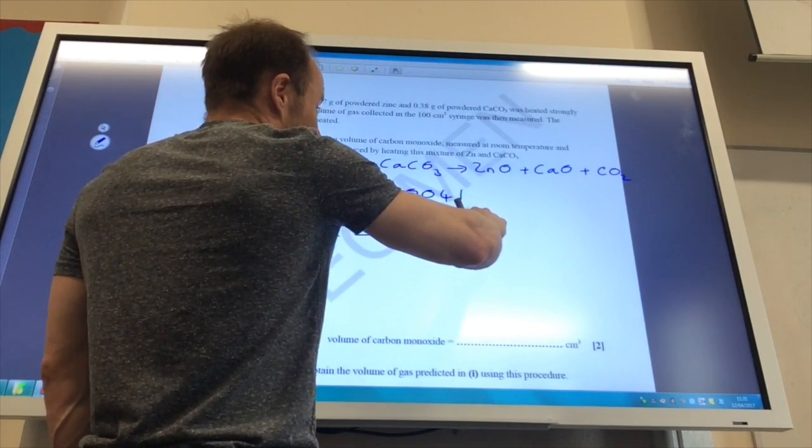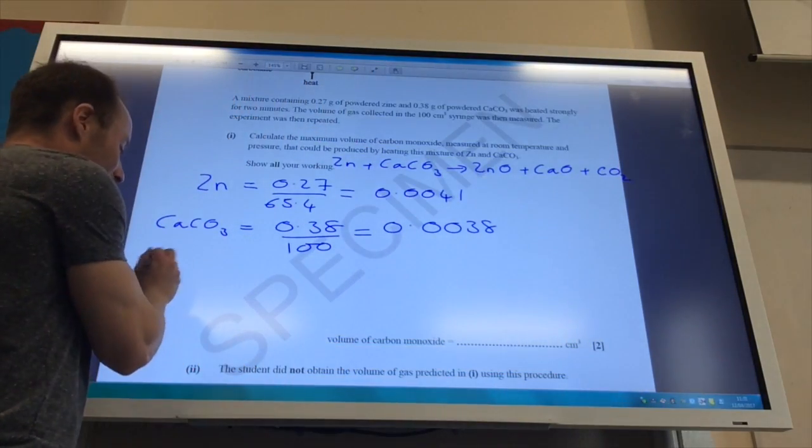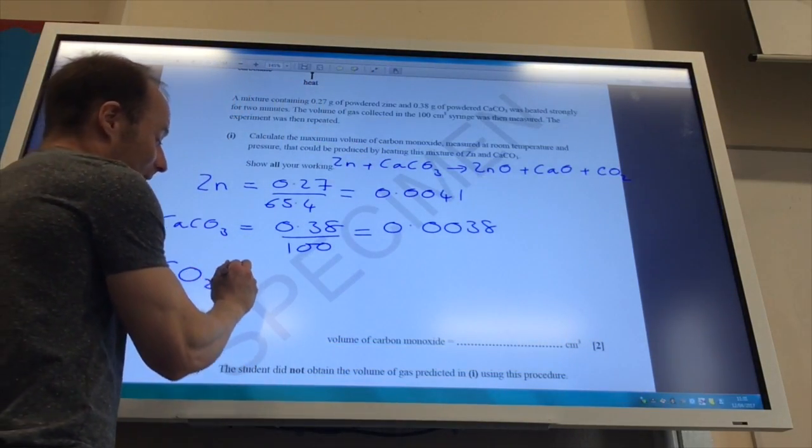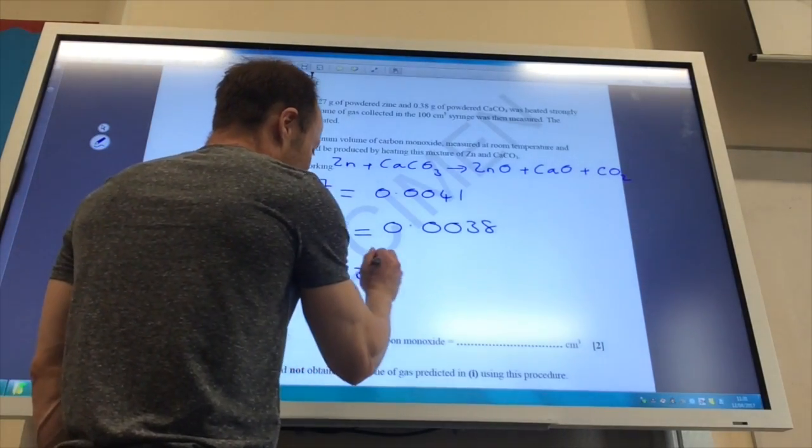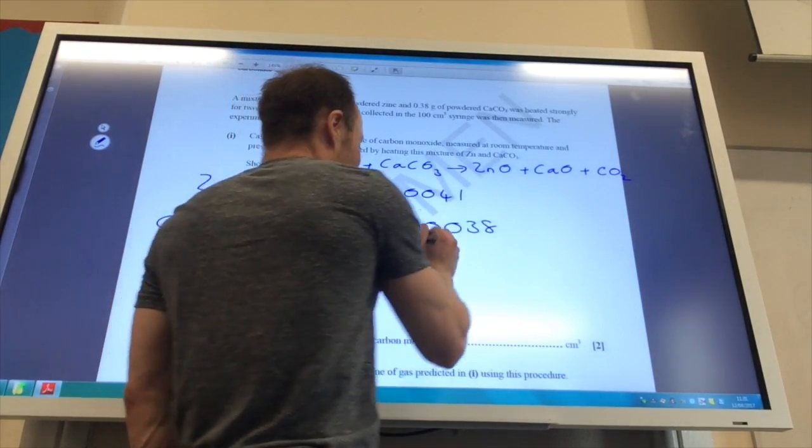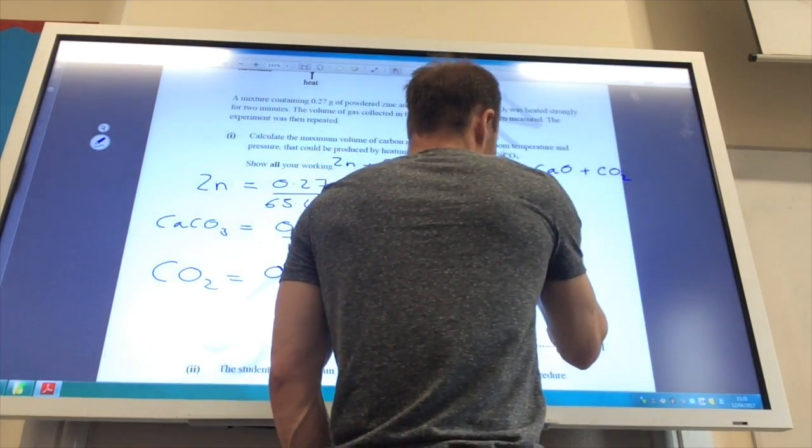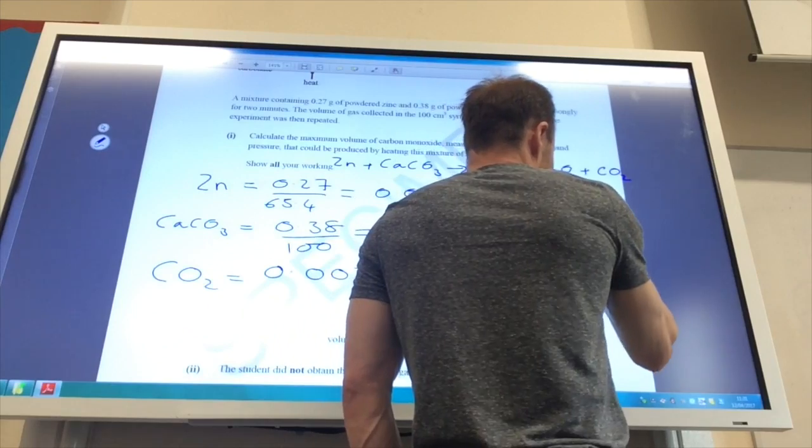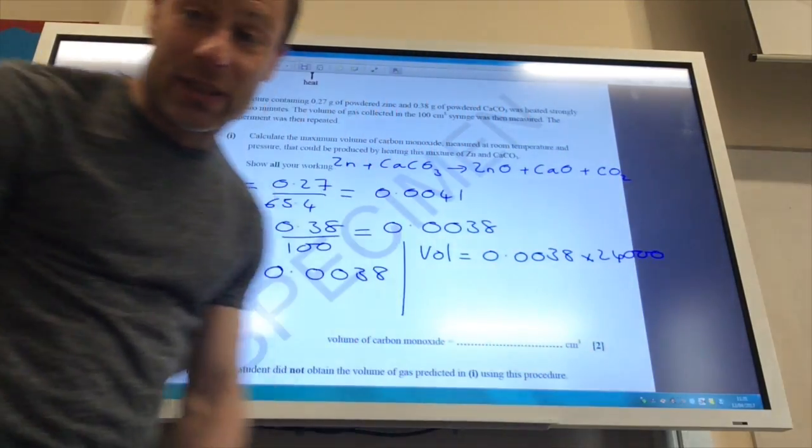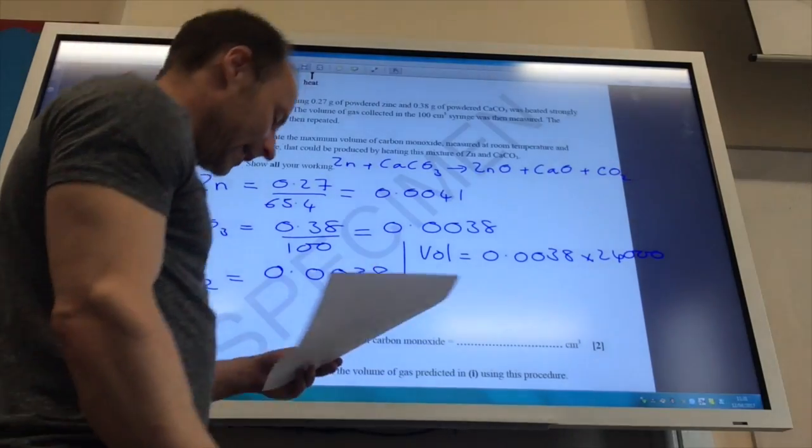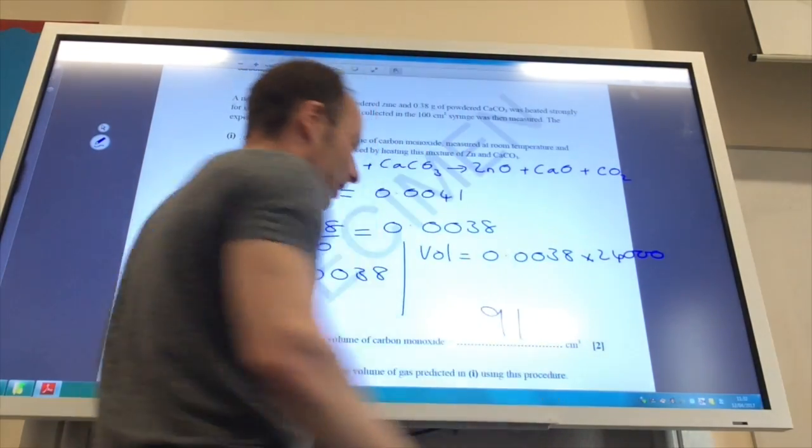All of this we hope is going to react to produce carbon monoxide. So how many moles of carbon monoxide am I going to make? Well, it's going to be the same as that, 0.0038. To find the volume, it's going to be 0.0038 times by 24,000. Remember that number is on your data sheet. And that gives you 91 cubic centimeters.